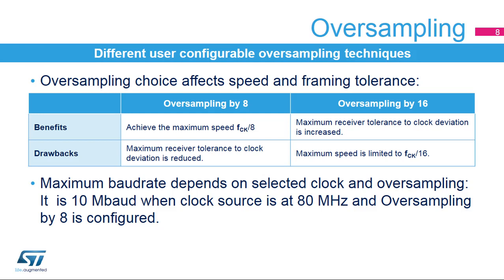Select oversampling by 16 (OVER8 = 0) to increase the tolerance of the receiver to clock deviations. In this case, the maximum speed is limited to FCLK divided by 16. The maximum baud rate that can be reached is 10 megabaud when the clock source is at 80 MHz and oversampling by 8 is configured. With other clock sources and/or higher oversampling ratio, the maximum speed is limited.